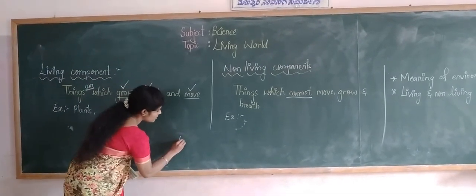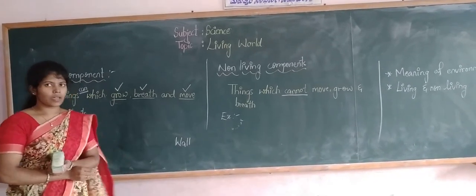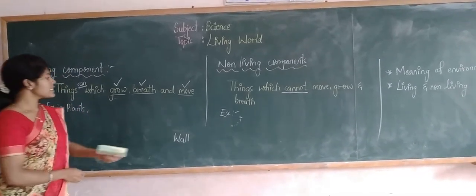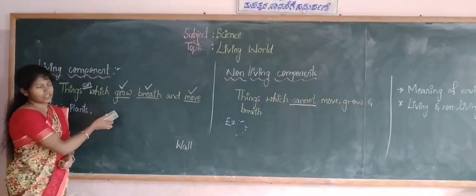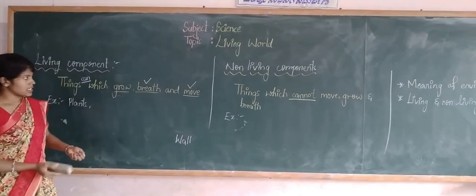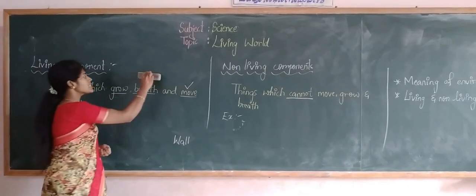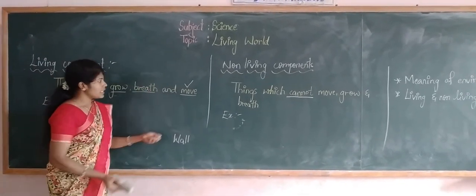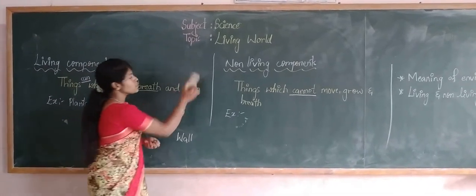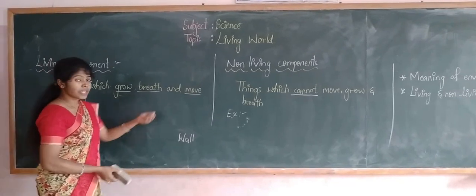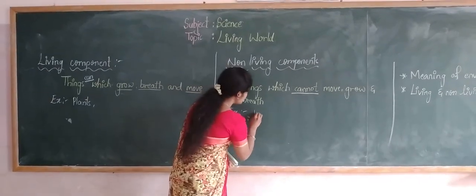Next is wall. Is wall an example for living components? No. Is it possible to grow a wall? No — the wall stays in the same position. In similar way, is it possible for the wall to breathe? No. Does the wall go from one place to another? No. Using these definitions, we can easily say that wall is an example for non-living things.